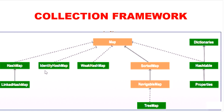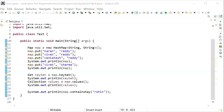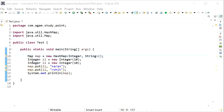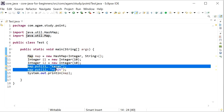The next one is IdentityHashMap. IdentityHashMap internally uses the == operator to identify duplicate keys. It is exactly the same as HashMap except that in HashMap, JVM uses the .equals() method to identify duplicate keys, which is meant for content comparison. But if we want to use the == operator instead of .equals() to identify duplicate keys, then we should go for IdentityHashMap.